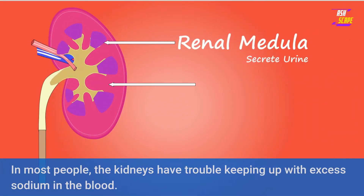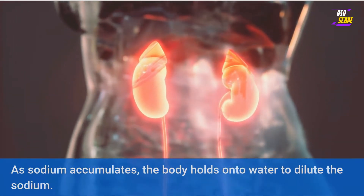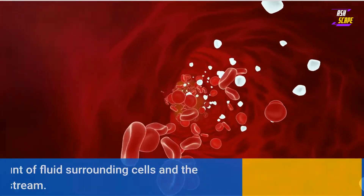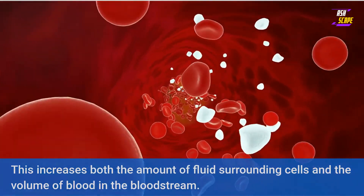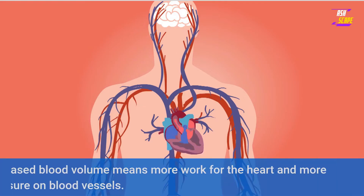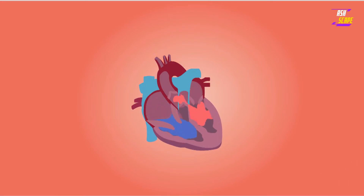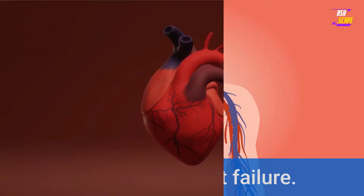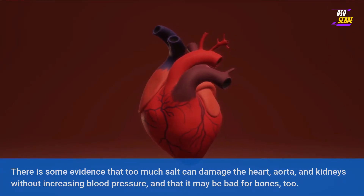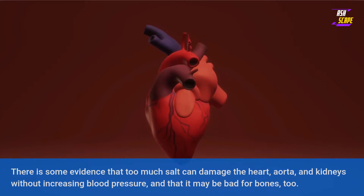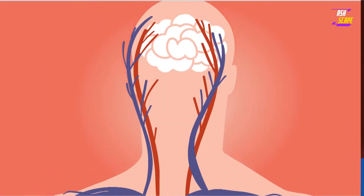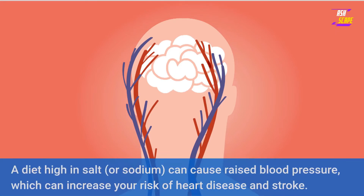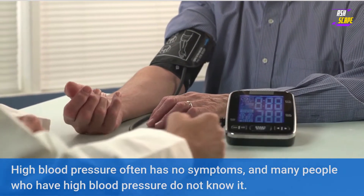In most people, the kidneys have trouble keeping up with excess sodium in the blood. As sodium accumulates, the body holds onto water to dilute the sodium, increasing both the fluid surrounding cells and the volume of blood in the bloodstream. Increased blood volume means more work for the heart and more pressure on blood vessels. Over time, the extra work and pressure can stiffen blood vessels, leading to high blood pressure, heart attack, and stroke. It can also lead to heart failure. There is some evidence that too much salt can damage the heart, aorta, and kidneys without increasing blood pressure, and that it may be bad for bones too.